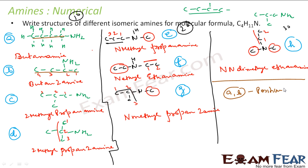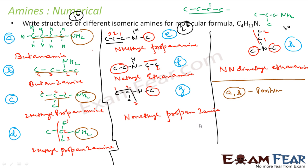Similarly, a and c are chain isomers, because a has a straight chain and c has a branched chain. In fact, a, c, and d are all chain isomers — one is straight and the others are branched, all still with the NH2 group intact. So among the primary amines, we have both position isomers and chain isomers.